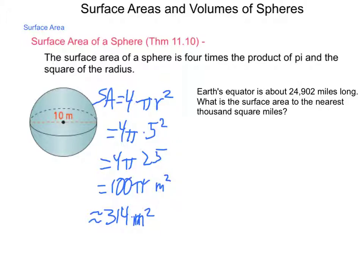Next, a little bit of application that can come from this. Earth's equator is about 24,902 miles long. What's the surface area to the nearest thousand square miles? In order to calculate this, we're going to have to do a little bit of computation on the side. First, let's start with circumference. Circumference of a circle is 2 pi r. And what we need is surface area, which is 4 pi r squared.